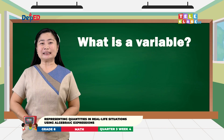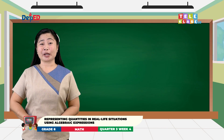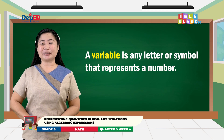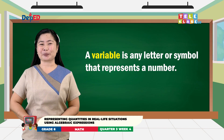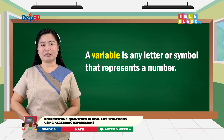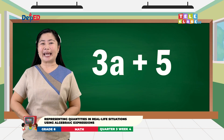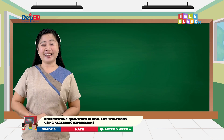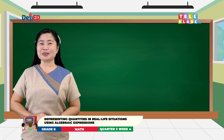What is a variable? A variable is any letter or symbol that represents a number. For example, in our expression 3a plus 5, 'a' is the variable. Now, let us proceed.